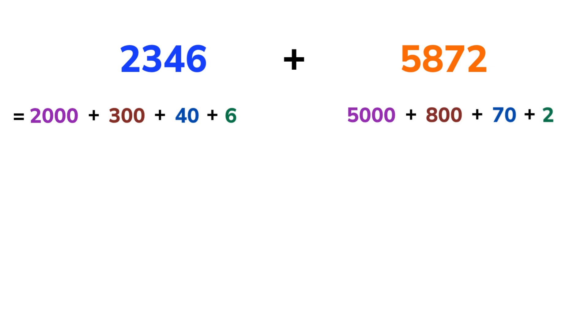Now let's add each part step by step. Thousands: 2,000 plus 5,000 equals 7,000. Hundreds: 300 plus 800 equals 1,100. Tens: 40 plus 70 equals 110. Ones: 6 plus 2 equals 8.